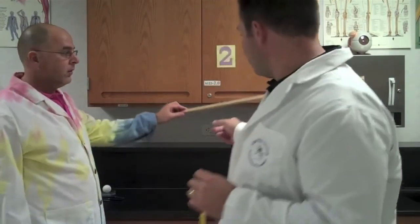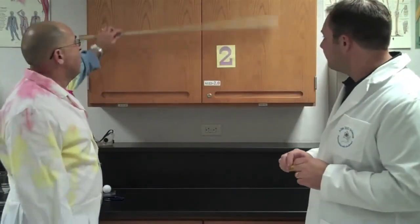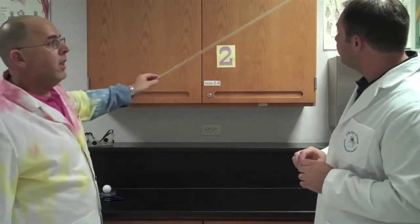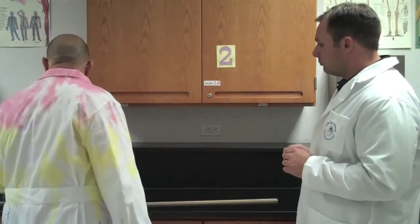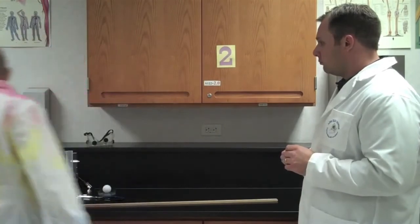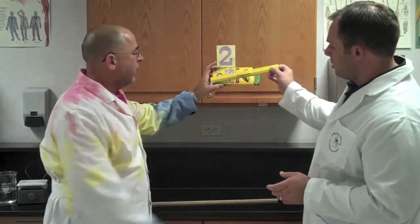So for measuring smaller distances, smaller lengths, we would use a metric ruler. Versus larger distances and larger lengths, we would use a meter stick. So if I was going to measure this cabinet, I would use the meter stick. As opposed to if I was going to measure this box, then I would use the metric ruler.